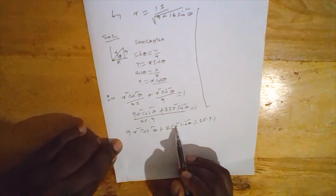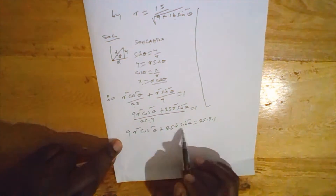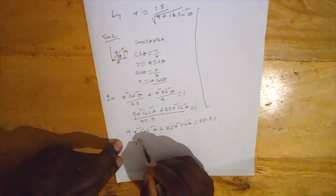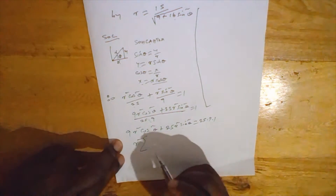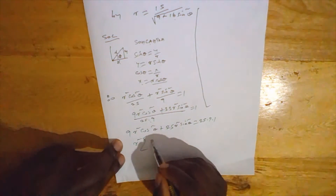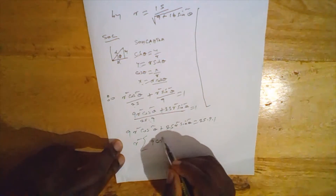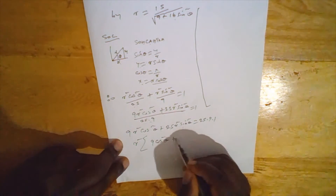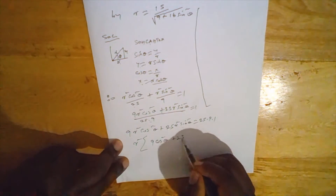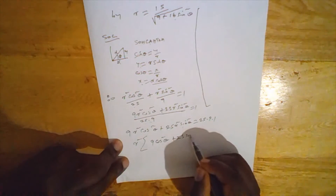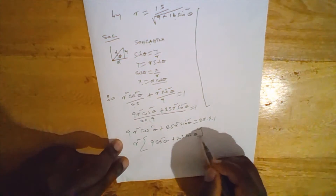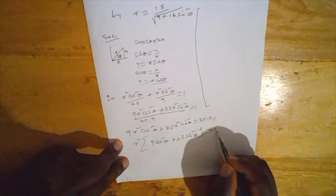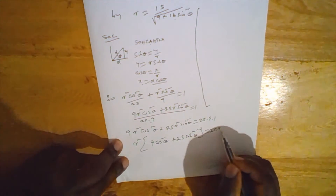Here r squared is common, so we factorize r squared out. We have r squared times the quantity 9 cos squared theta plus 25 sin squared theta equals 25 times 9.